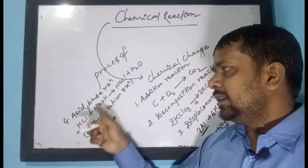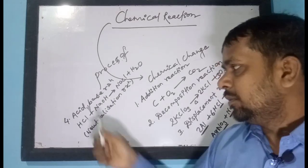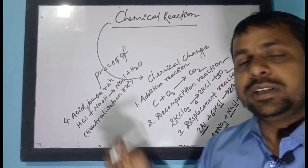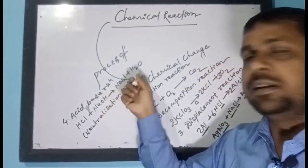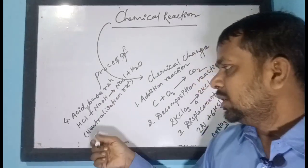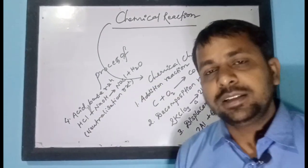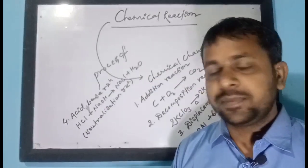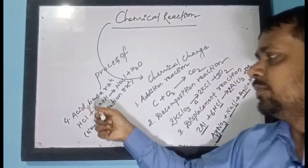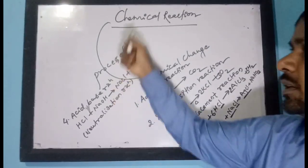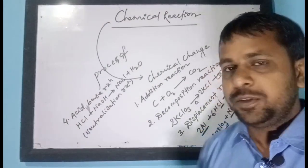It is called a neutralization reaction because the acid and base are reacting, and after the reaction both their properties are destroyed. Neutral substances are formed. So this reaction is also called a neutralization reaction. Through this combination also, chemical reaction can take place.